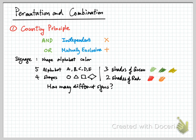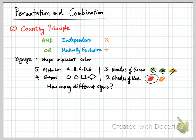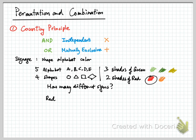Think about the mutual exclusiveness. If the color is one kind of green, then it cannot be the other colors — it cannot be other shades of green or red. If it is red, then it cannot be the other color. So these colors are mutually exclusive with one another. However, if the color is red, it can still be alphabet E or C, or the shape can be circular or square. The color red does not exclude any of these alphabets or shapes — so they are not mutually exclusive. Only the two shades of red and three shades of green are mutually exclusive, so we add them together.